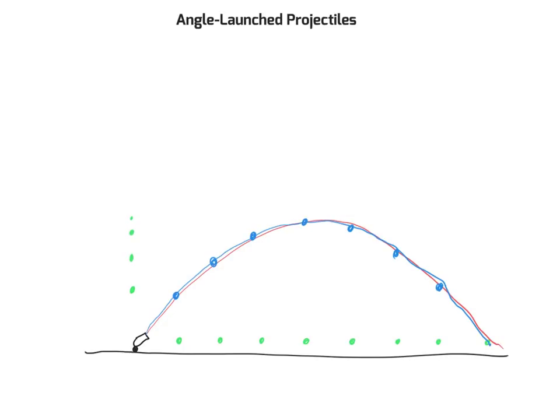Why are we getting that parabolic shape? We're getting it because we can keep the two directions — X and Y — and their motions separate when we analyze projectile motion. We do not have to combine these directions together, and that's a huge advantage when solving problems. We can keep X and Y directions separate and solve those two sides independently from one another.